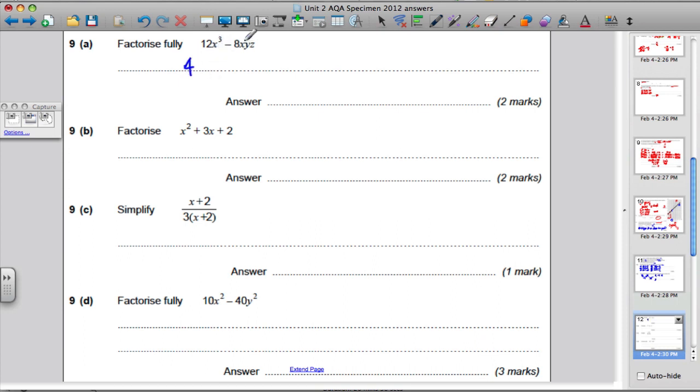Then we've got x cubed and an x, y, z, assuming they're all distinct. What, if anything, divides into them both? Well, just an x does. And what are we left with in the brackets? Well, what's 12x cubed divided by 4x? It's 3x squared. And what's 8yz divided by 4x? Well, it's equal to 2yz. And we were doing a subtract. So the answer is 4x, 3x squared minus 2yz.